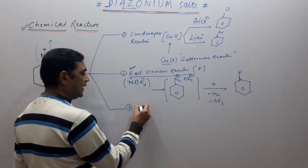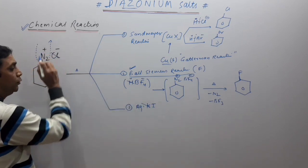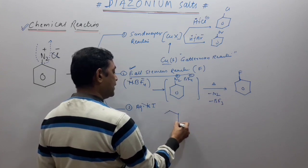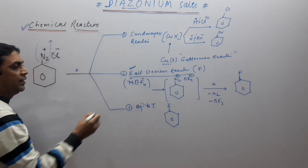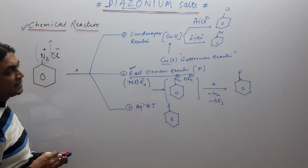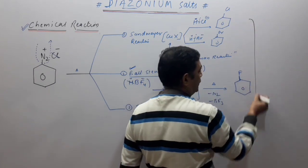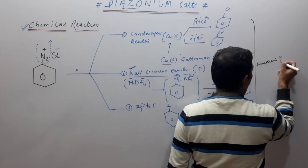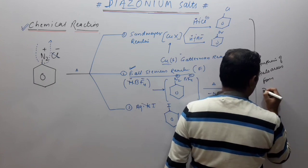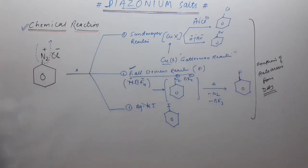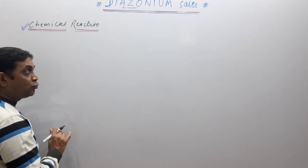If this same reaction is done with aqueous potassium iodide (KI), the N2 comes out, KCl is released, and iodine is placed on benzene — giving iodobenzene. So all these reactions — Sandmeyer, Gattermann, Balz-Schiemann, and iodination — are collectively called synthesis of halo arenes from diazonium salt.